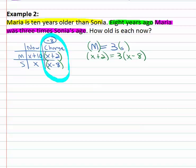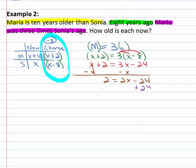We now have an equation we can quickly solve by distributing the three. x plus two is three x minus twenty-four. Get the variable on one side by subtracting x from both sides. Two is equal to two x minus twenty-four. Solving the two step equation by adding twenty-four to both sides. Twenty-six is equal to two x. And finally dividing both sides by two x is equal to thirteen.